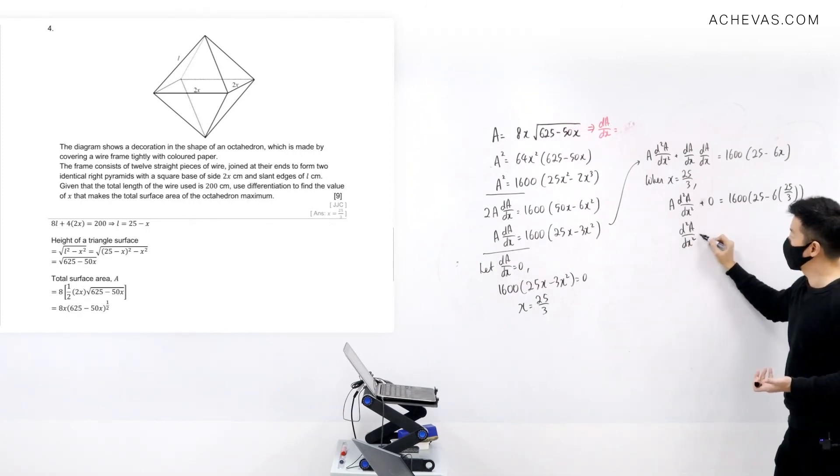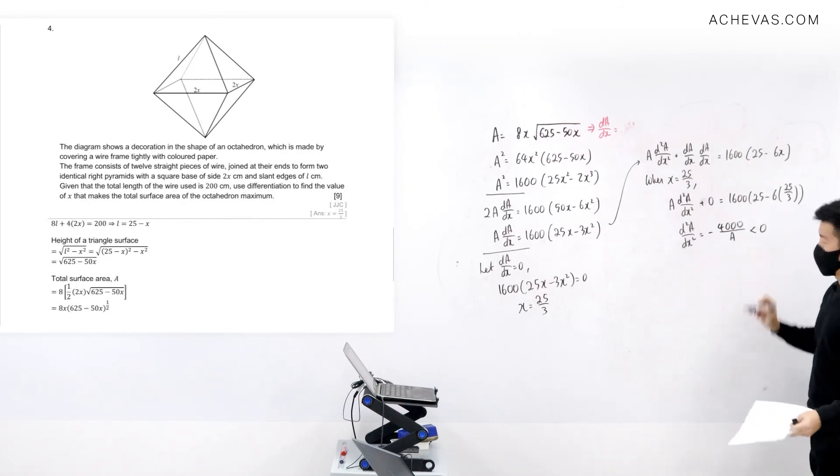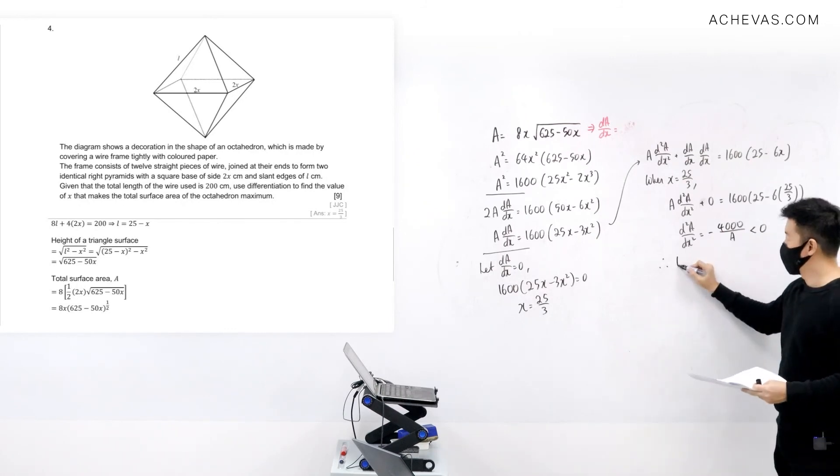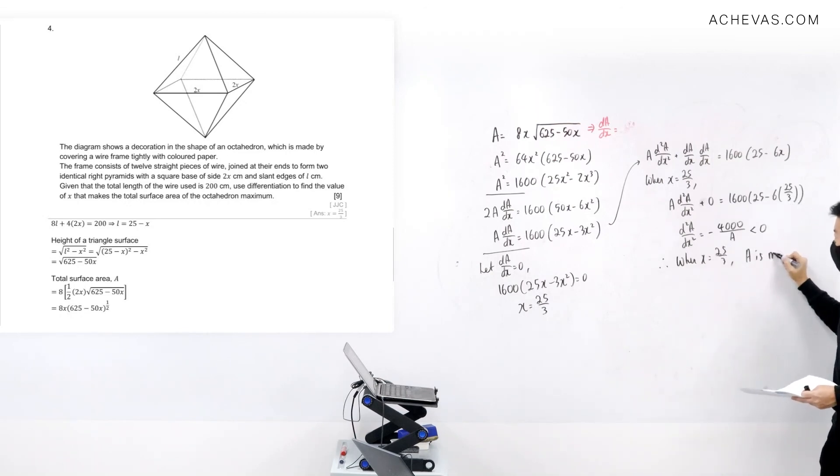So d²A/dx² this is going to work out to be equal to -4000/A. This is less than zero. Therefore I know that when x = 25/3, A is at its maximum.